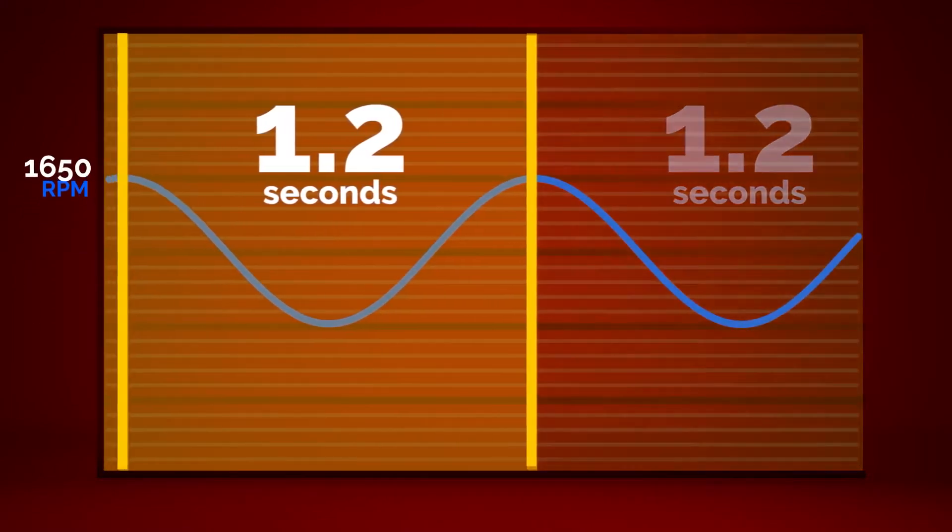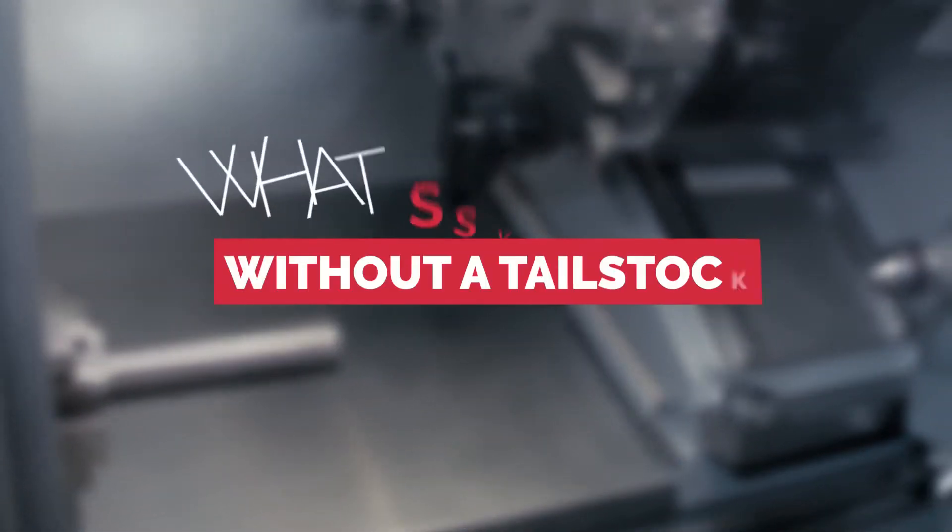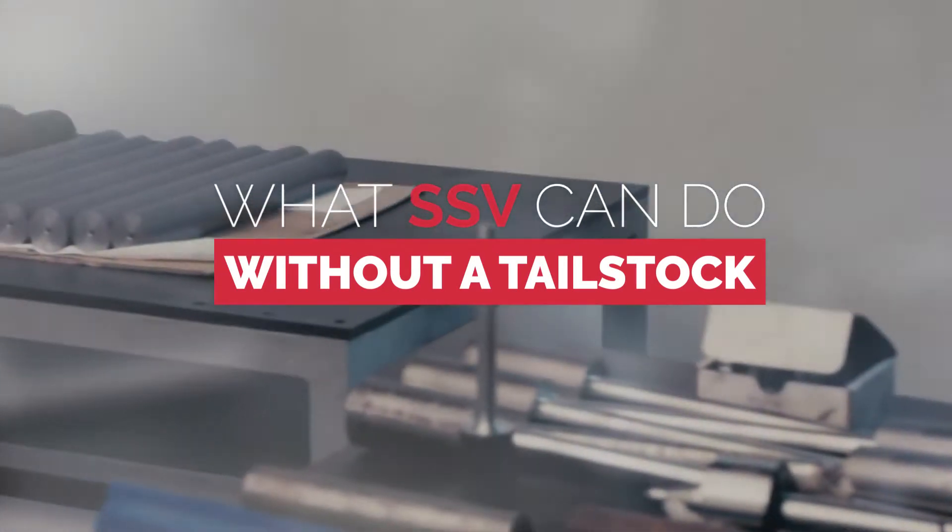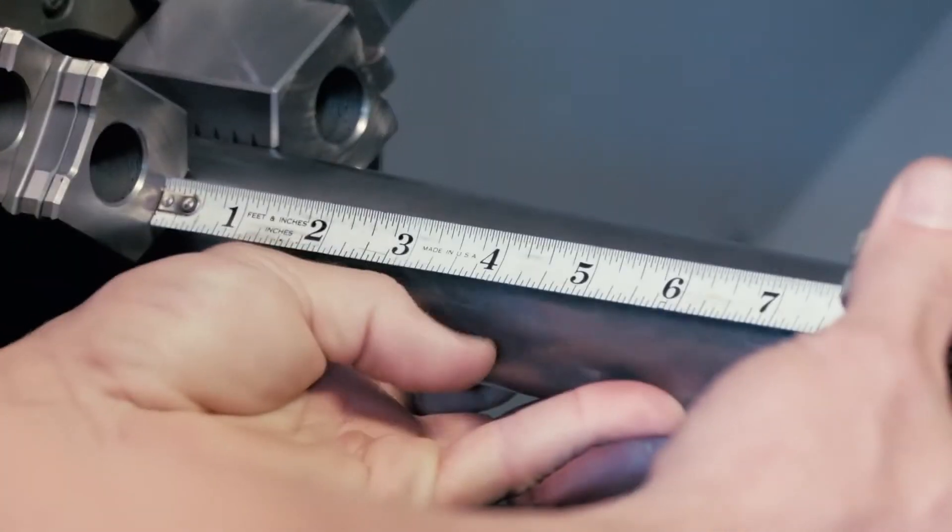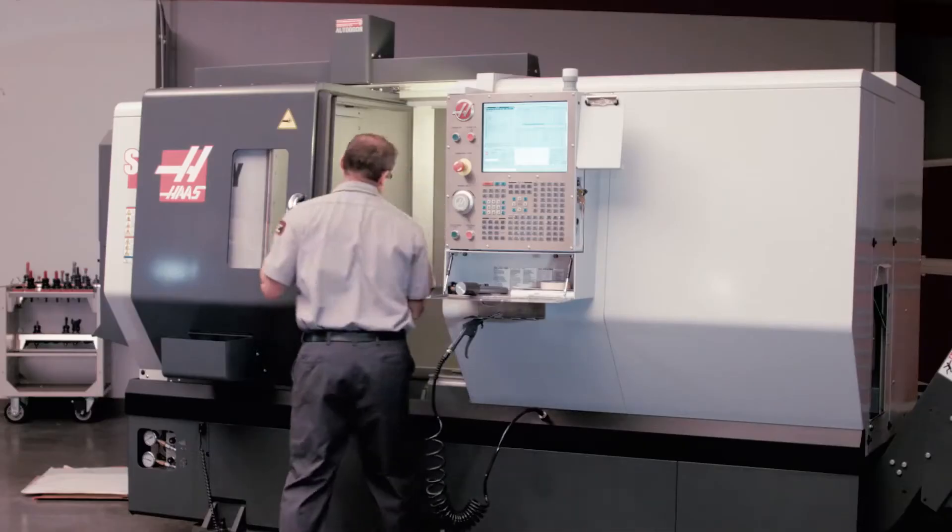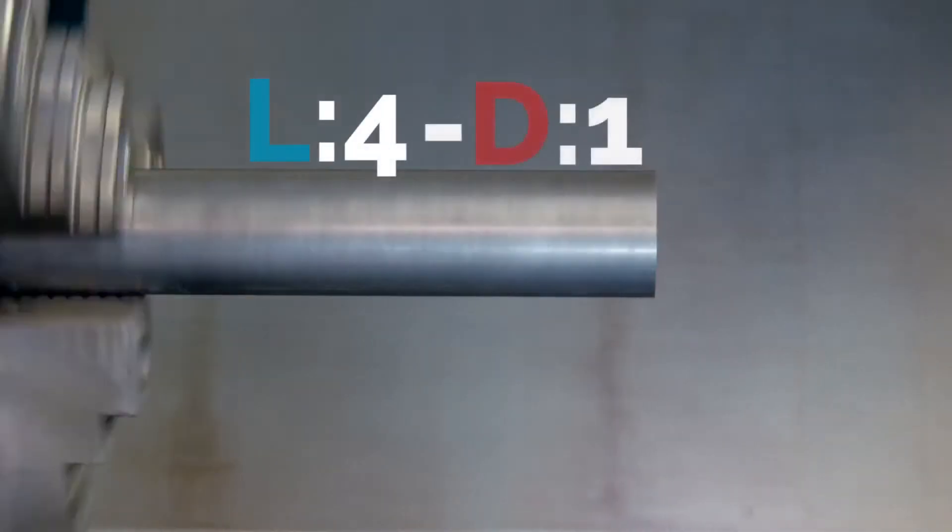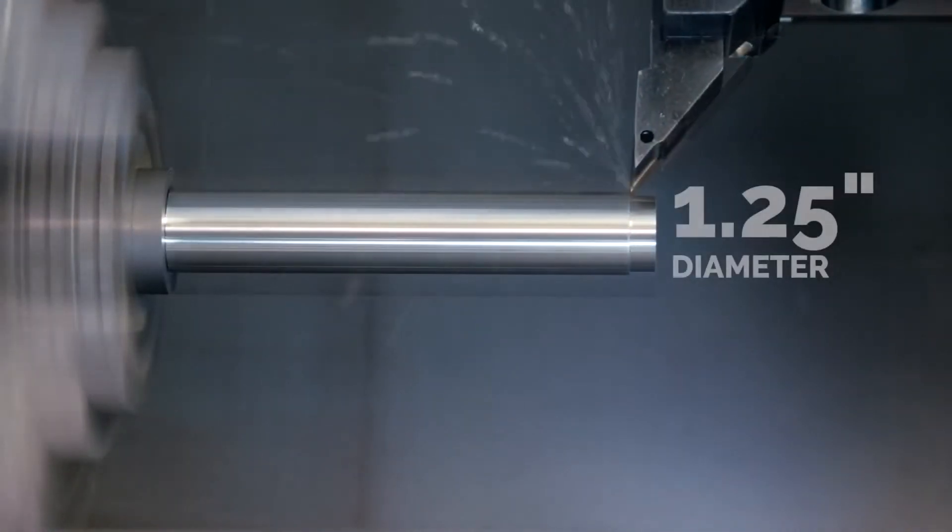Now that we understand the SSV concept a little, let's look at what SSV can do when we're cutting without tailstock support. We're going to turn this 1.75 inch diameter shaft and see where the chatter starts. The shaft is held 7 inches out at an unsupported length to diameter ratio of 4 to 1.